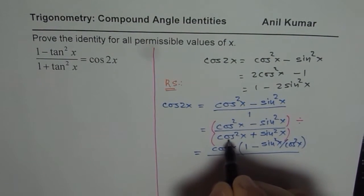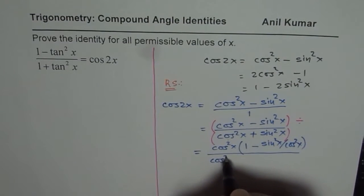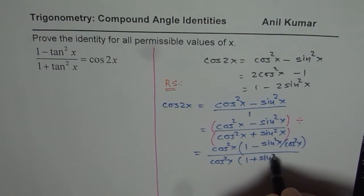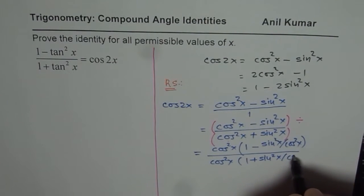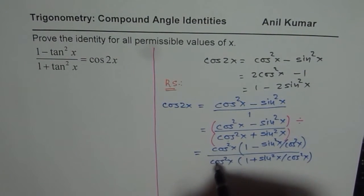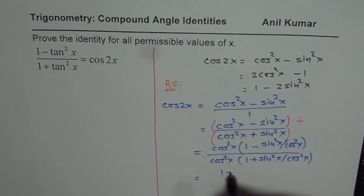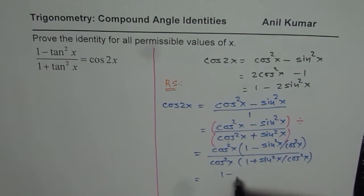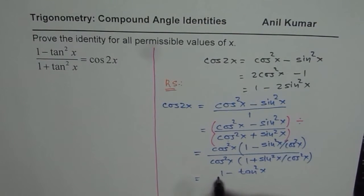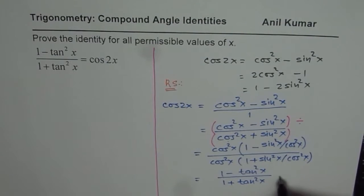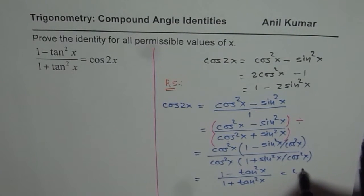Divided by, when you factor cos square x, you get cos square x, 1 plus sin square x over cos square x. Now that gets cancelled off, so you get 1 minus sin over cos is tan, so we get tan square x over 1 plus tan square x. And that equals the left side.